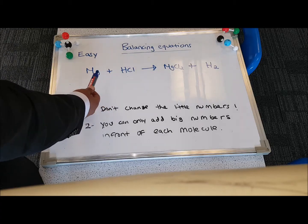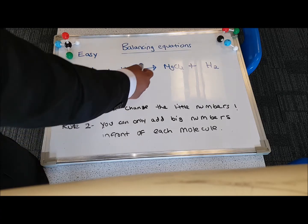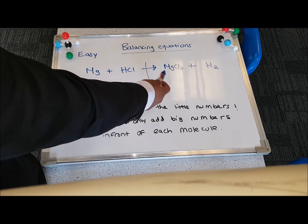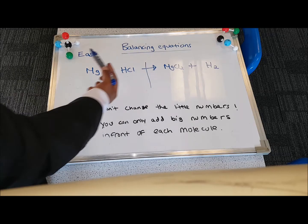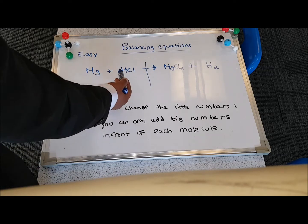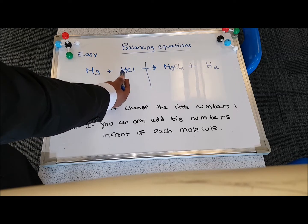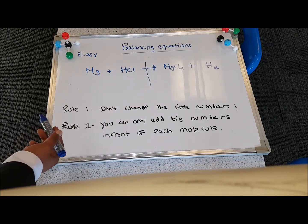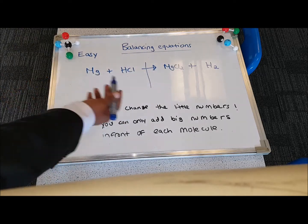If you have a look at the number of magnesium atoms on the left and right, it's balanced. There's one Mg on the left, one on the right. The number of hydrogens on the left, there's one, and there's two on the right. So straight away, that's unbalanced.